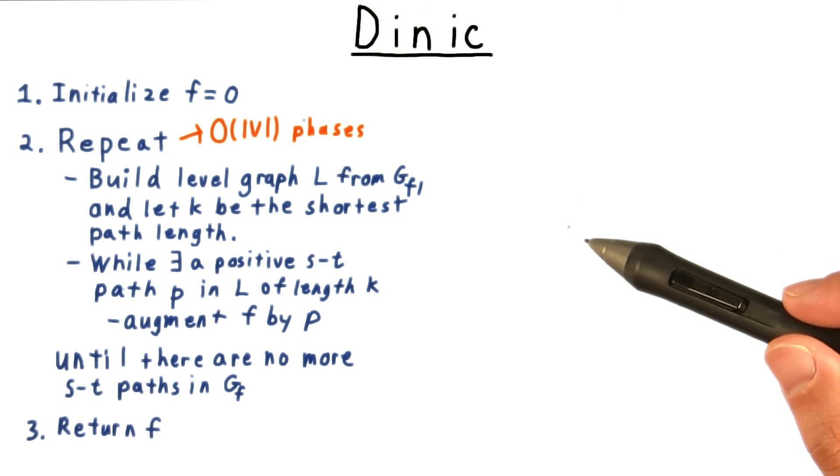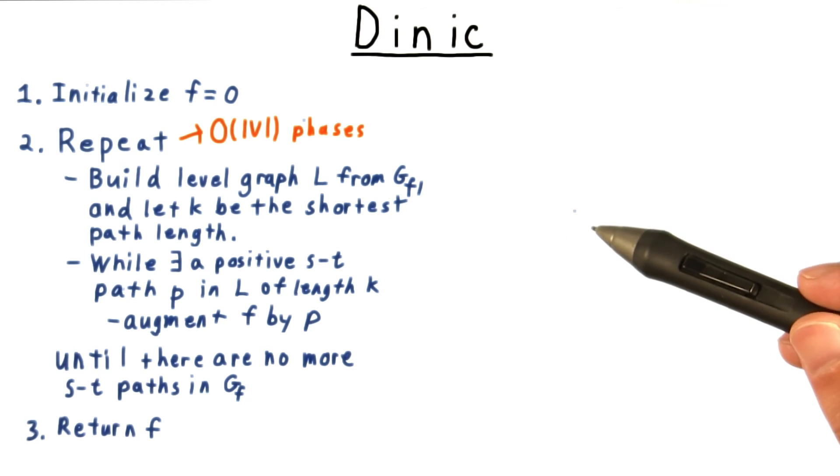Augmenting by a shortest path flow doesn't create a shorter augmenting flow. Hence, once we've exhausted all paths of a given length, the next shortest path must be one edge longer.